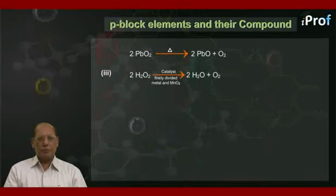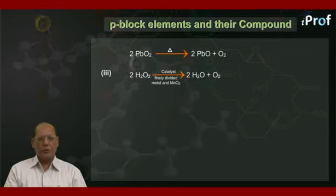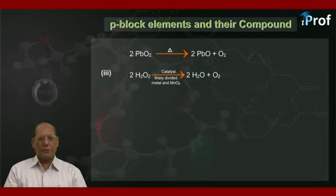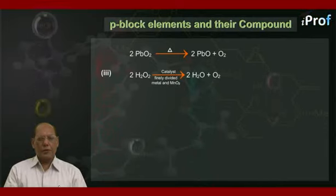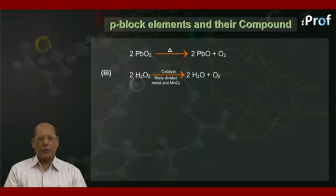Method 3 is the decomposition of hydrogen peroxide: 2H2O2, in the presence of a catalyst such as finely divided metals and manganese dioxide, gives 2H2O plus O2.